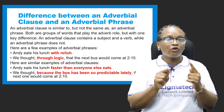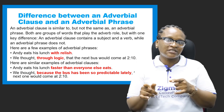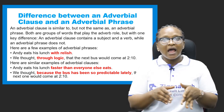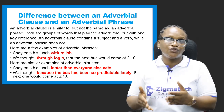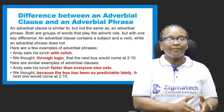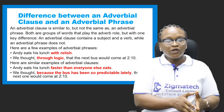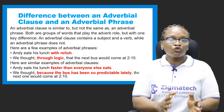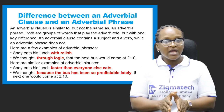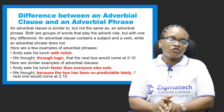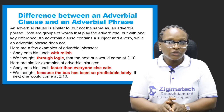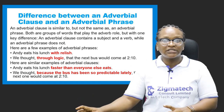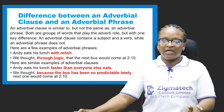Adverbial clauses are dependent clauses. We have two types of clauses: the main clause and the subordinate clause. The subordinate clause is also called the dependent clause. The main clause is independent — it can stand on its own, makes sense, and has a finite verb. The subordinate clause cannot stand on its own, but it has a finite verb, which is what makes it a clause rather than a phrase.